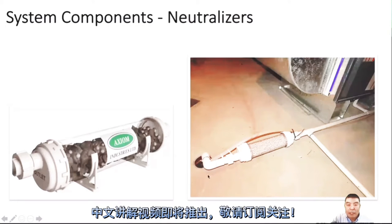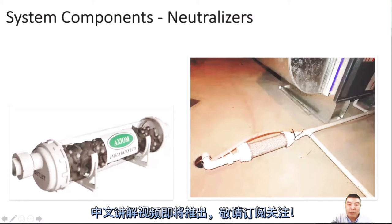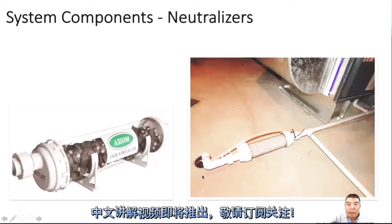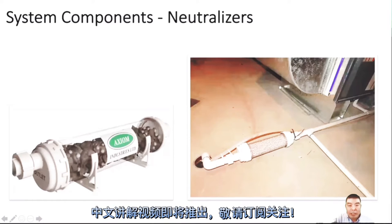Some houses have copper pipes, and if you always drain the condensate water into them it will damage the pipe. Not all provinces have this requirement, but we should know about it. If you look at the neutralizer media and the color has changed, it needs to be replaced.